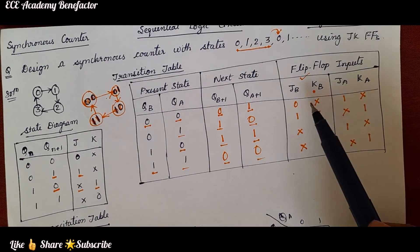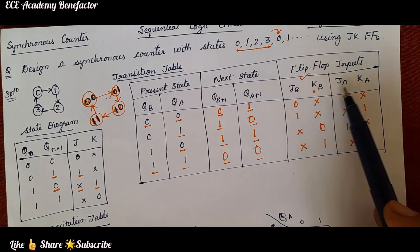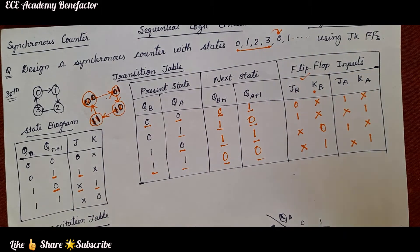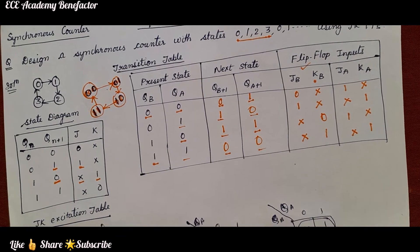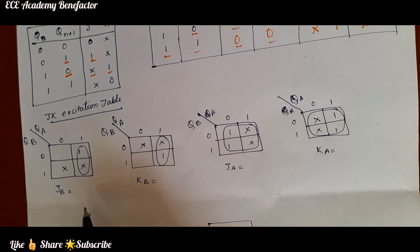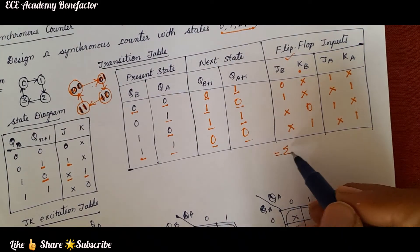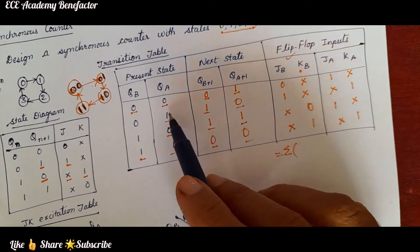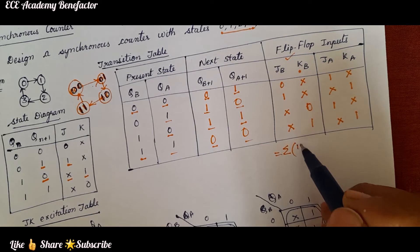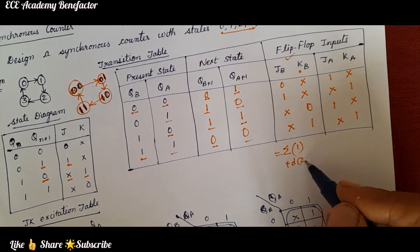Now we need to simplify the four K-maps — one each for JB, KB, JA, and KA. We will be using two-variable K-maps for solving this. Let us first solve JB. JB is equal to where 1 is present — it is present at cell 1, and don't cares are at cells 2 and 3.